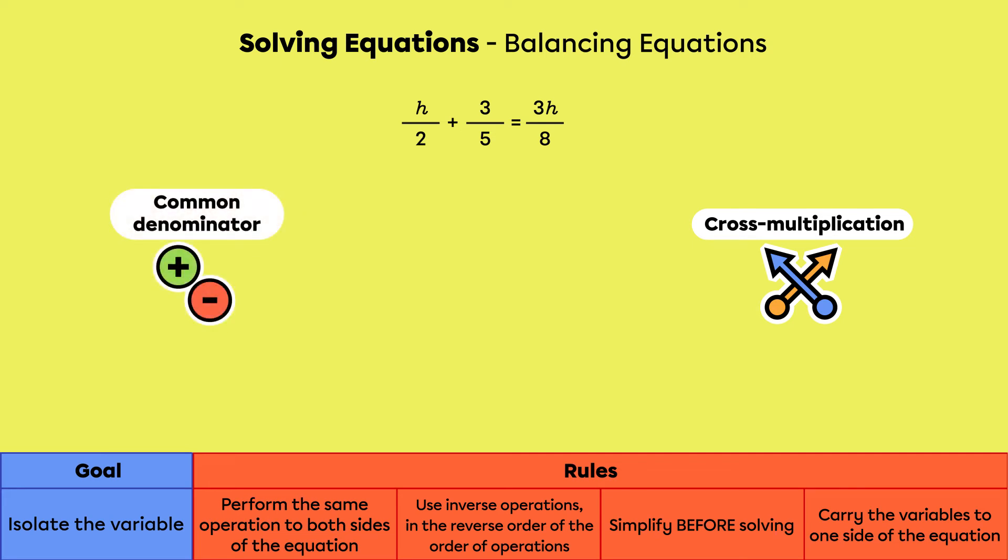So we need to put them over the same denominator. A quick way to find a common denominator of two fractions is to multiply the two denominators together. In this case, 10 is the common denominator. To put the first fraction over 10, we need to multiply the numerator and the denominator by 5, which gives us 5h over 10. For the second fraction, we need to multiply the numerator and the denominator by 2, which gives us 6 over 10. When we add two fractions, we add only the numerators. So 5h over 10 plus 6 over 10 becomes 5h plus 6 over 10.